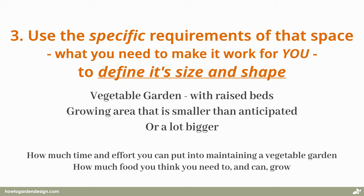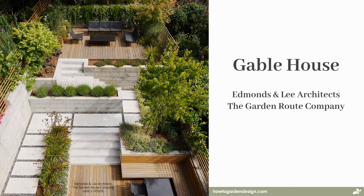So, these are the three principles I want to explore with you today. To help us walk through them, I'm going to bring in an example of a good project I found on Pinterest. The project is called Gable House by Edmonds and Lee Architects, and the landscaping was done by the Garden Root Company. I'm not certain if they did the landscape design and construction, or just construction itself, but I'll just use the term designers to broadly cover both parties.